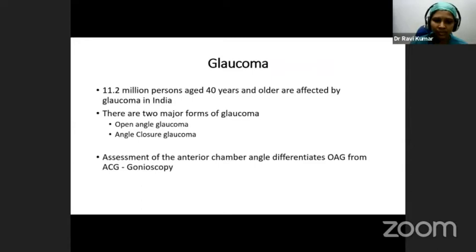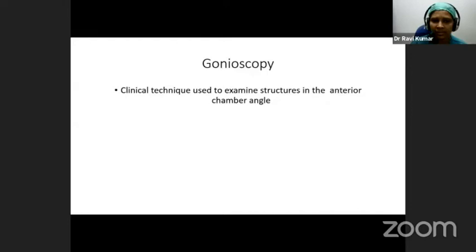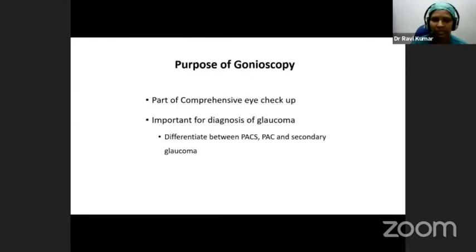The two major forms of glaucoma — open angle and angle closure glaucoma — can be differentiated only by assessment of the anterior chamber angle, that is by gonioscopy. The primary treatment of both conditions differs: you would need a peripheral iridotomy in angle closure glaucoma patients, and medication should be started in open angle glaucoma patients. So gonioscopy is a clinical technique used to examine the structures of the anterior chamber angle, and it is important in diagnosing glaucoma and differentiating the various spectrum of primary angle closure disease and secondary glaucoma.